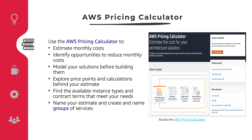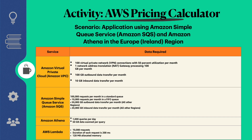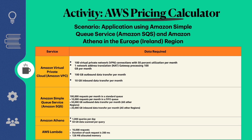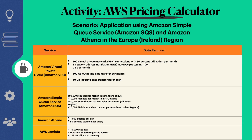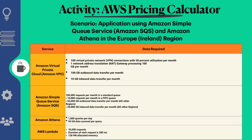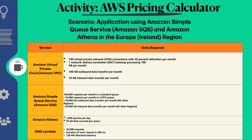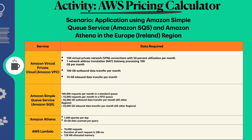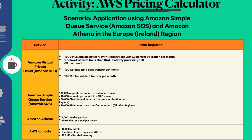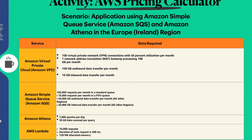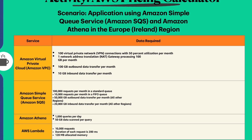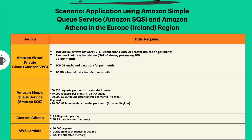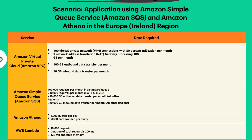The AWS Pricing Calculator estimates are broken into your total for the first 12 months, your total upfront, and your total monthly bill. This is especially useful if you are studying cloud computing from a business or marketing background. As a scenario example: if we need to build an application using Amazon Simple Queuing Service in the Ireland region using a VPC, Amazon SQS, Amazon Athena, and AWS Lambda, the calculator can provide a cost estimate based on your inputs.